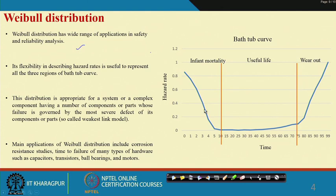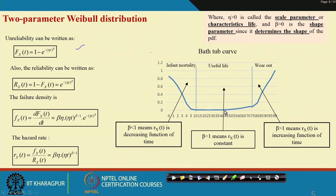Weibull is a very flexible distribution. It is appropriate for a system of complex components whose failure is governed by the most severe defect. It is extensively used in reliability and safety studies, failure analysis like corrosion resistance studies, electronics equipment like transistors, and mechanical equipment like ball bearings and motors. The variable of interest is typically time to failure.